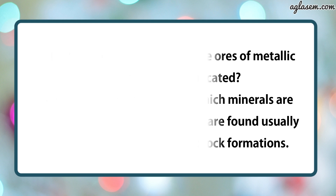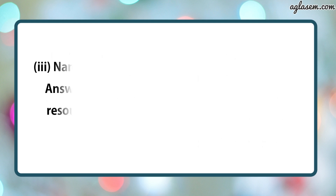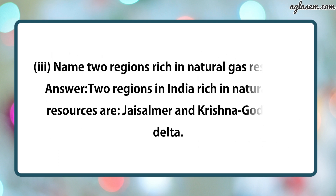Third part says: name two regions rich in natural gas resources. The answer is: Jaisalmer and Krishna Godavari delta.